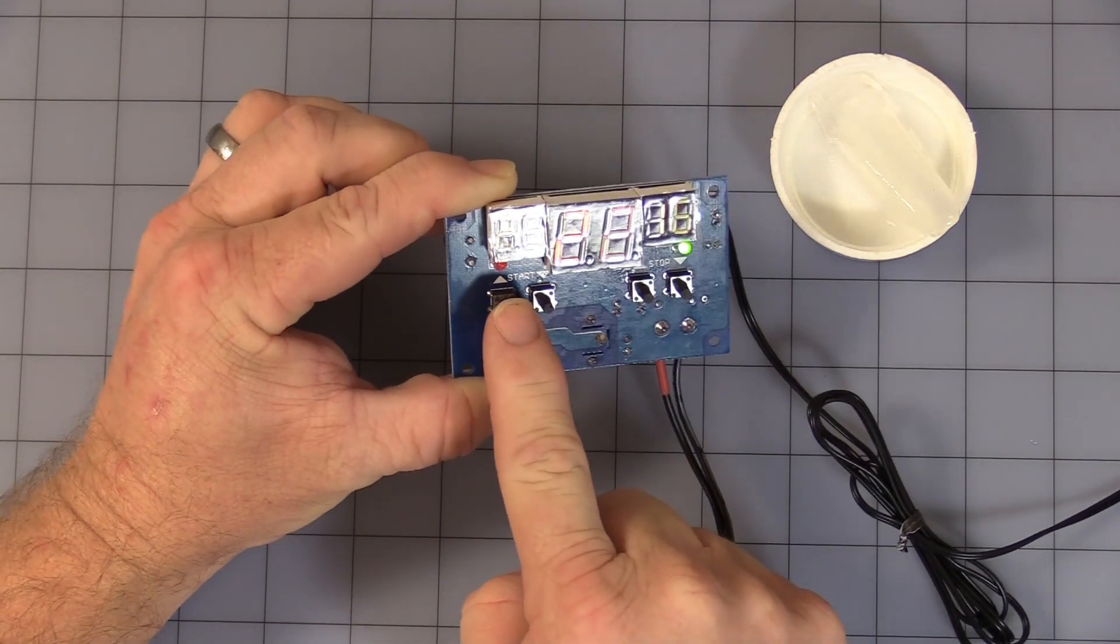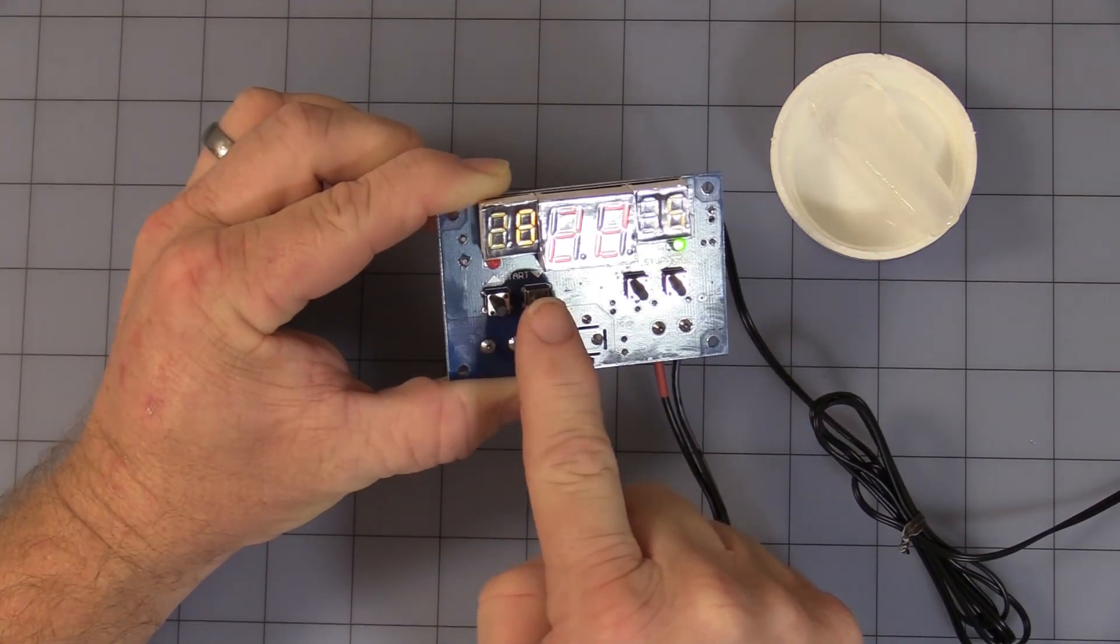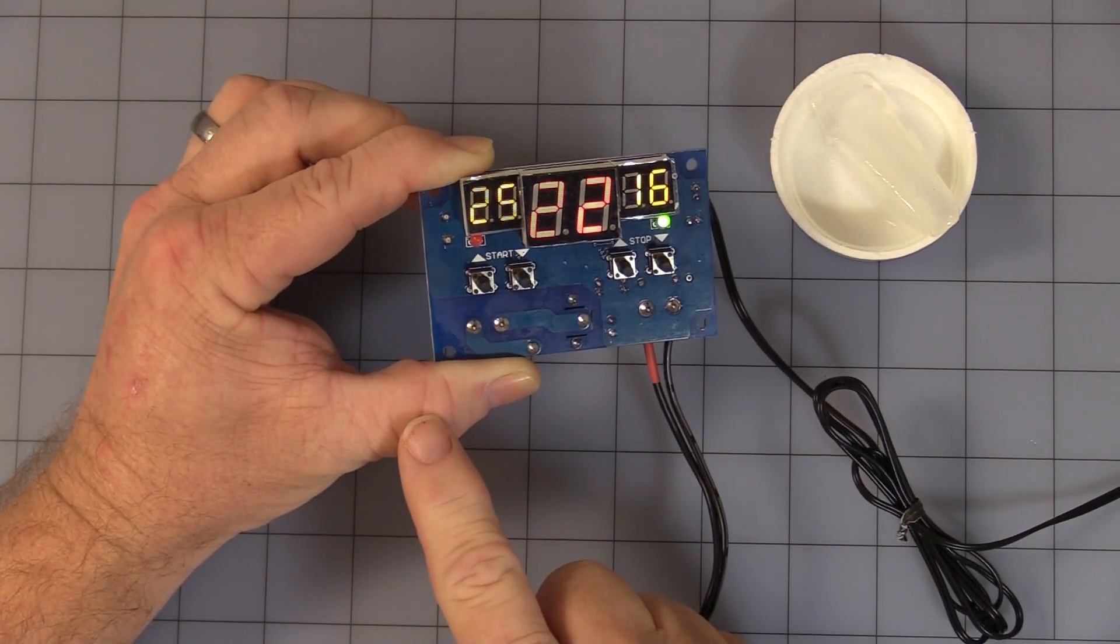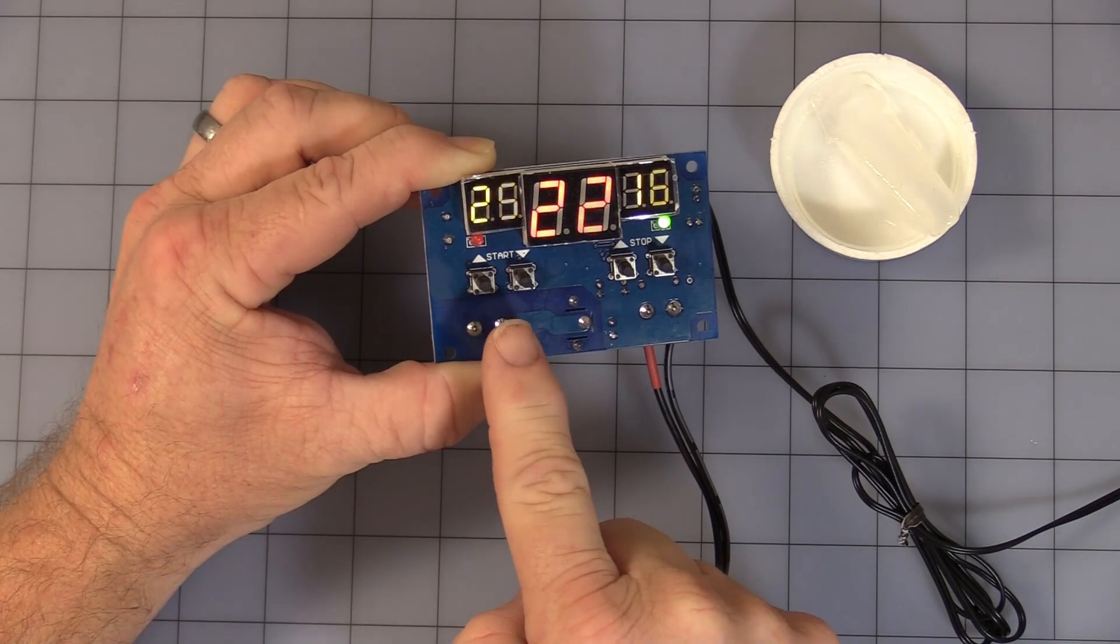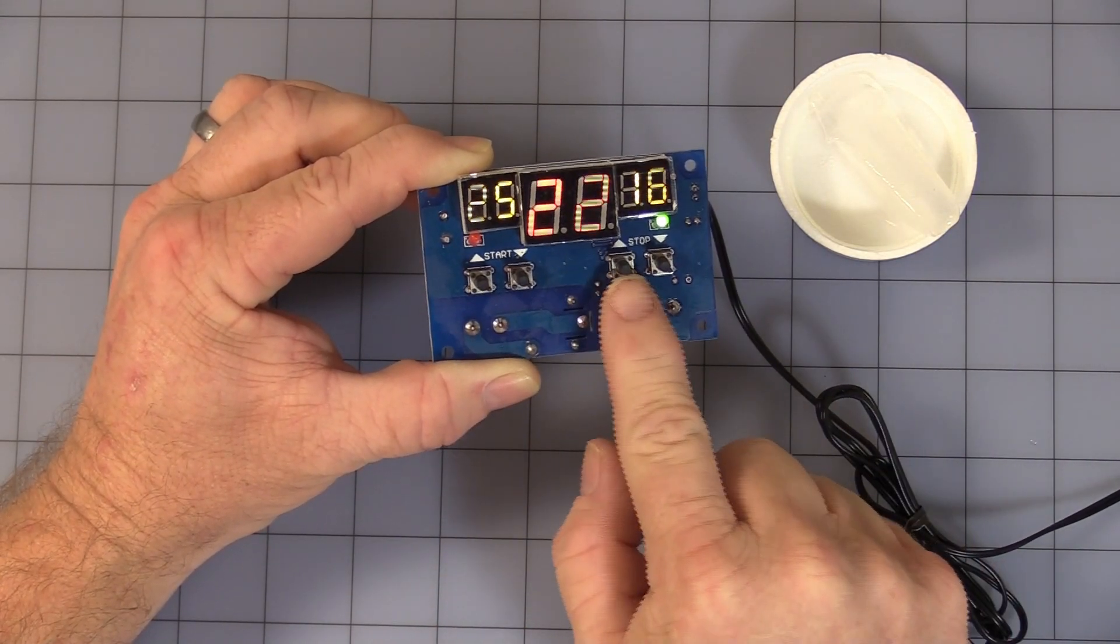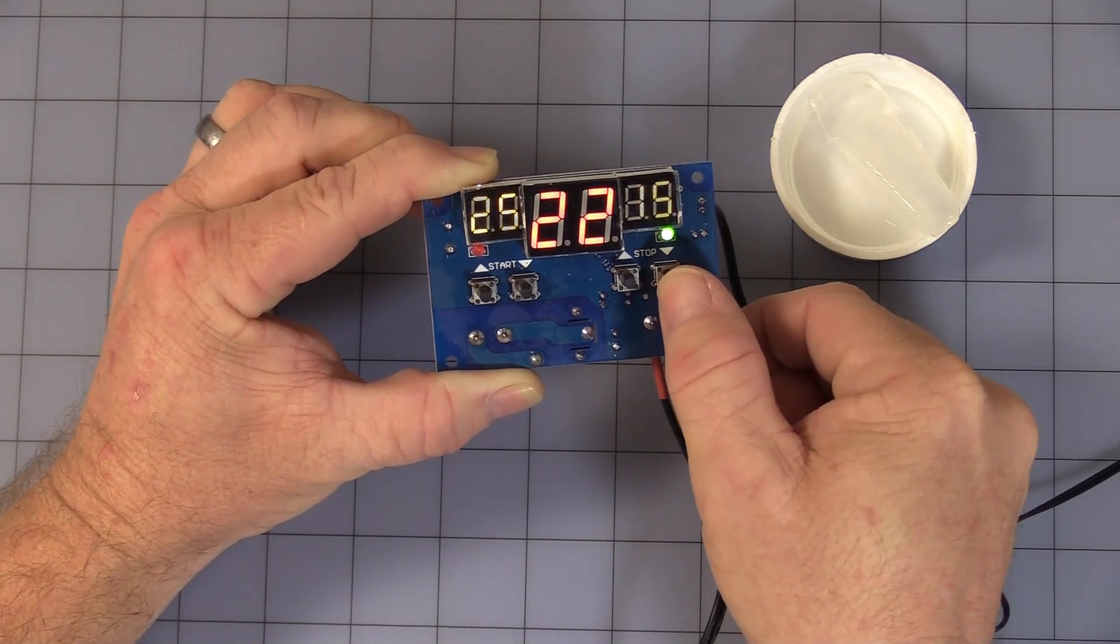You can change the settings by simply pressing the up and down arrow until you get the setting you desire. It flashes for a moment, then goes back to program, and that's your relay on. Now for your relay off, same situation. You press the up and down arrow to get to the setting you want your relay to turn off.